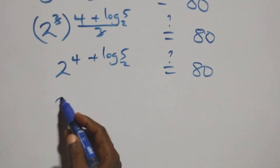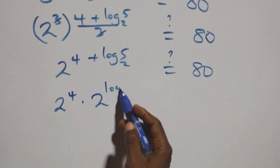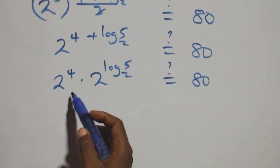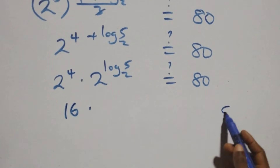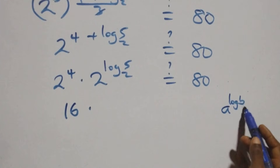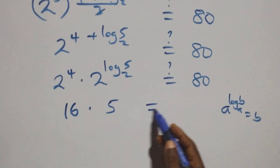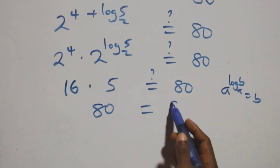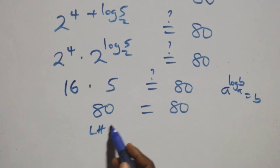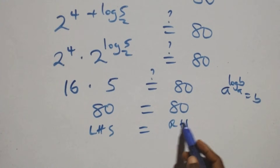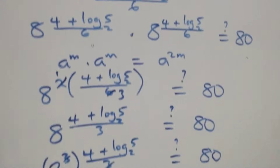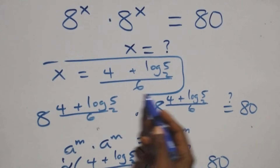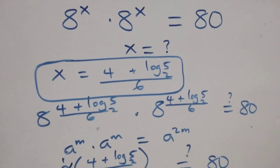We apply the indices rule, and this becomes 2 raised to power 4, times 2 raised to power log₂5, equals 80. Now 2 raised to power 4 gives 16, and 2 raised to power log₂5 equals 5, by the rule a raised to power log_a(b) equals b. So 16 times 5 gives us 80, which equals 80 on this side. Left-hand side equals the right-hand side, and therefore we conclude that x equals (4 plus log₂5) over 6 satisfies this given problem.